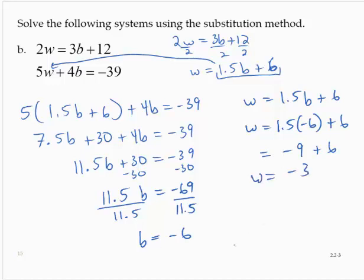So b is negative 6 and w is negative 3. The solution, in alphabetical order, would be (-6, -3).